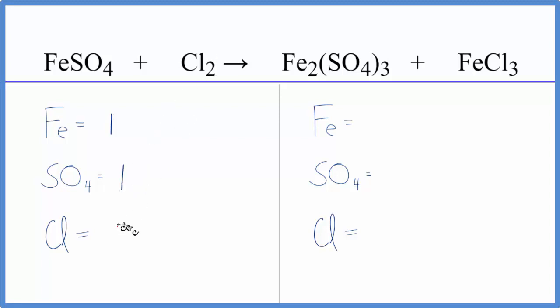Then I have two chlorines. Product side, two irons. And be careful, there is an iron right here. One of those. So I have a total of three. Then this SO4, I have it right here. Three times the one sulfate. Three of those. It's a lot easier than counting each individual atom. Chlorines, I have three.